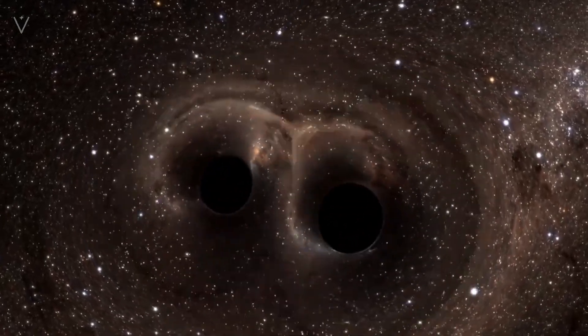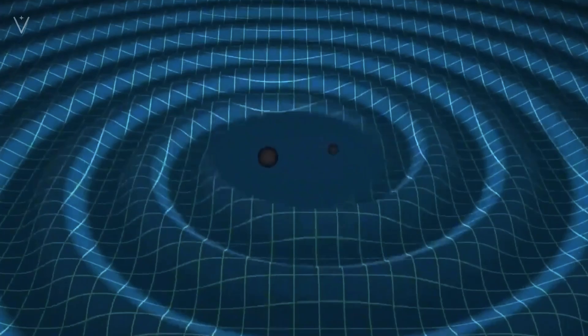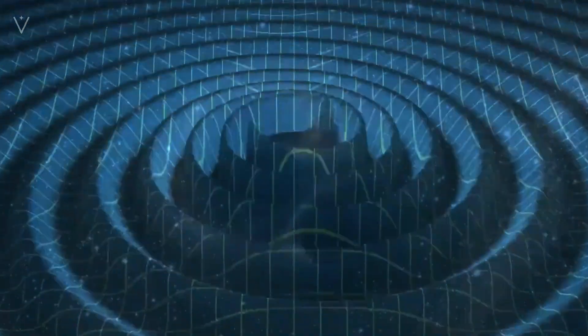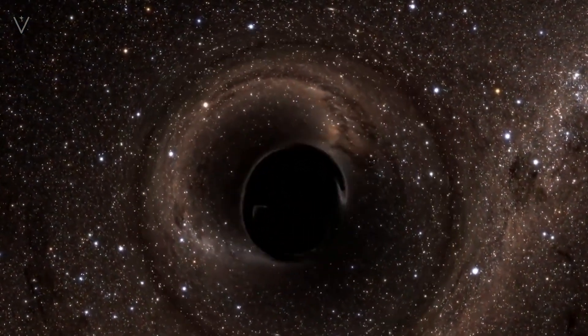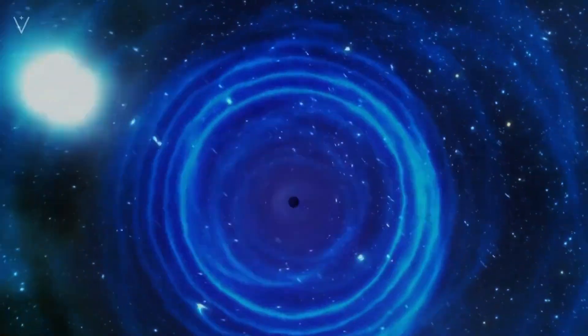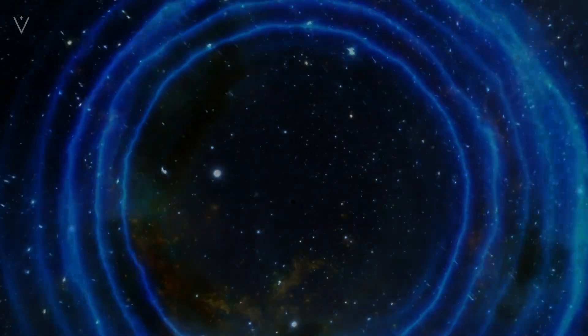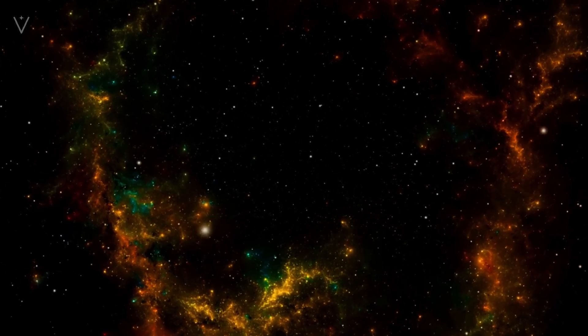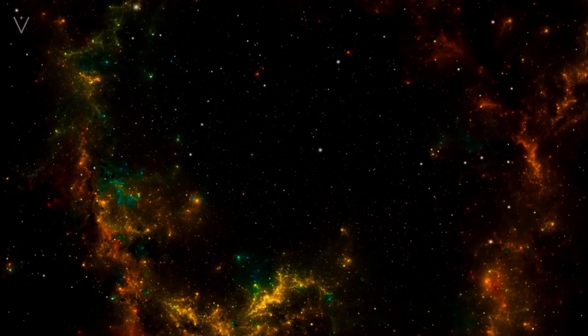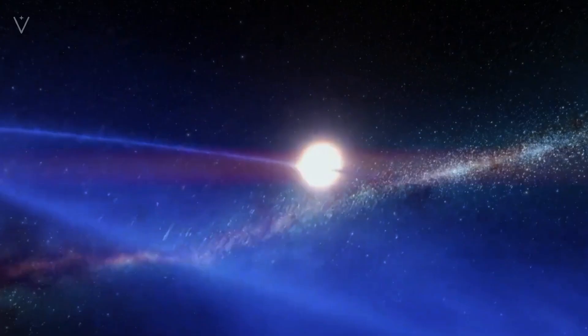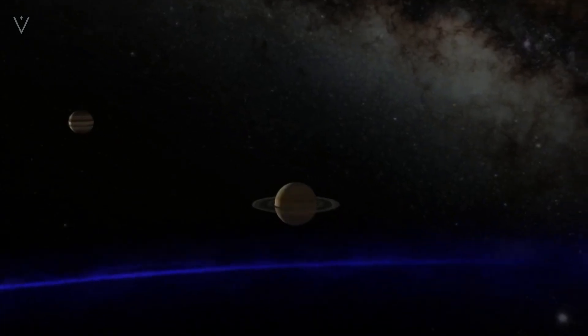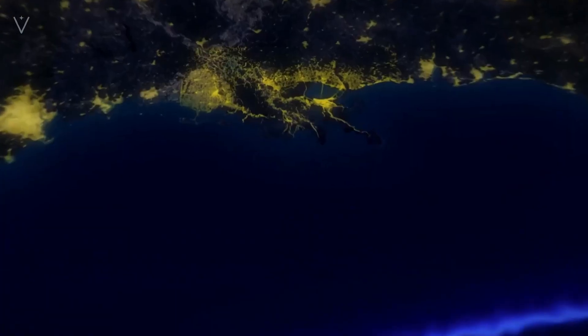When a massive object moves in space-time, it will also cause disturbances to the surrounding space-time and release energy outward in the form of waves, just like the ripples generated by a stone thrown into water. This phenomenon is called gravitational waves, which can propagate at the speed of light in the universe. Space-time is slightly distorted, so gravitational waves are also called ripples in space-time.